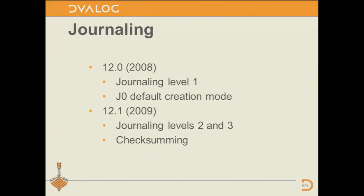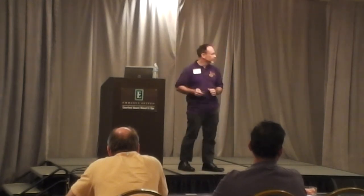As with large and small components, by default we had to leave journaling switched off, otherwise there would be no compatibility with earlier versions of the interpreter. You could switch it on with quad F props. In the next release we added additional journaling levels that gave greater protection, particularly in the case of the operating system crashing. We added checksumming, which adds more security and allows us to automatically repair files. I've put a paper on the conference website from a previous conference if you want more detail, but I will take questions.